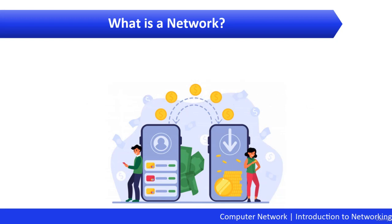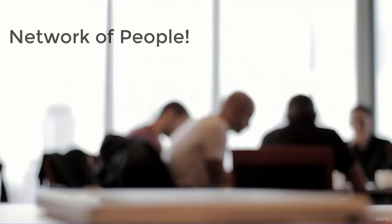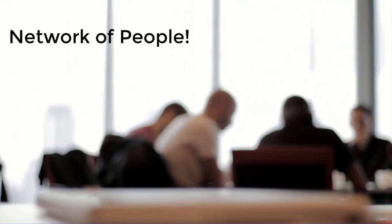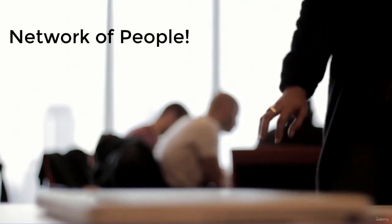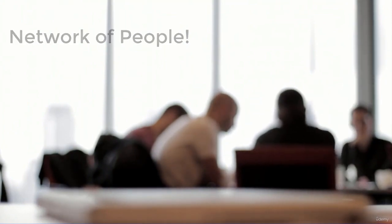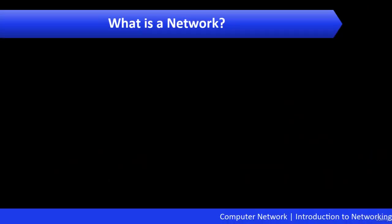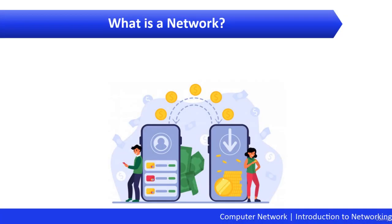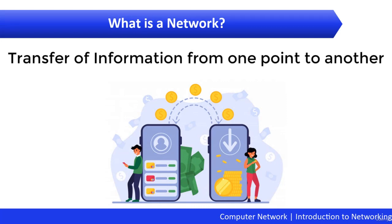If we try to correlate networking with our day-to-day life, we can see that a group of friends sharing ideas between members of the group or discussing various issues is also a network — a network of people. So a network is basically defined by one factor: the transfer of information from one point to another, or from node to node.